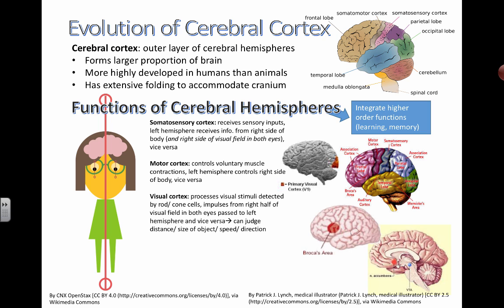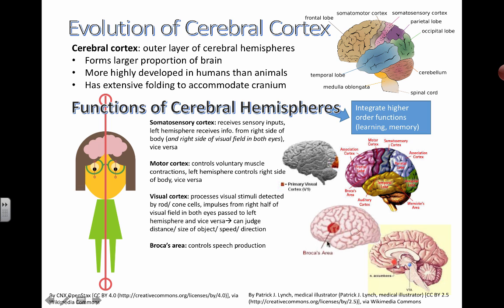Using all the information collected from your eyes, your visual cortex helps you decipher all the information so you can judge the distance of things, the size of things, the speed of things, and the direction in which they're moving.